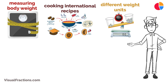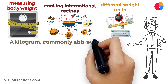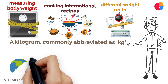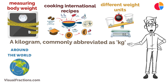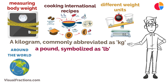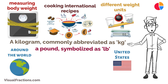Firstly, let's cover the basics. A kilogram, commonly abbreviated as kg, is the base unit of mass in the International System of Units, SI, and is widely used around the world. On the other hand, a pound, symbolized as LB, is a unit of weight predominantly used in the United States and a few other regions.